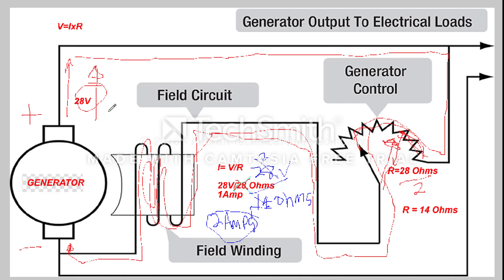So the generator control is effectively changing our output voltage by increasing or decreasing our resistance, which changes our value of voltage. In the next video we're going to talk about a carbon pile voltage regulator that does this automatically. To summarize: if we decrease resistance, we increase output voltage. If we increase resistance — by increasing the length of the resistor — we decrease current and we decrease output voltage. If we decrease resistance, we increase current, increase the magnetic field, and increase our output voltage.